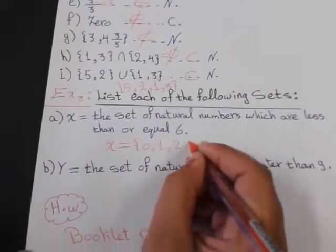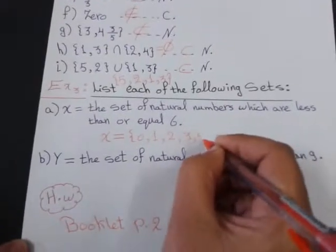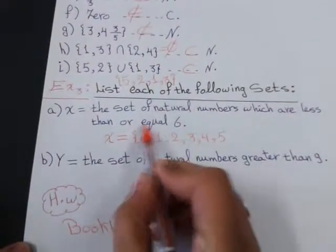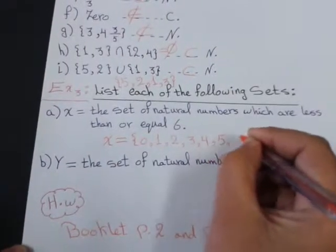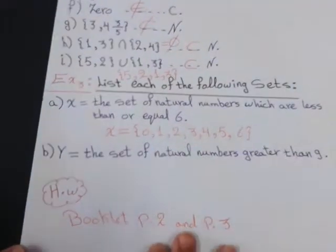Less than means 0, 1, 2, 3, 4, 5. Or equal I will take 6 with me. So, 5 and 6. Close braces.